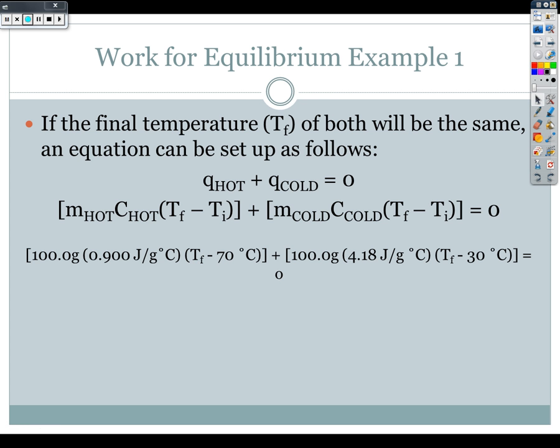0.900 J/g°C times the temperature final, which we don't know, minus the initial temperature, which was 70,